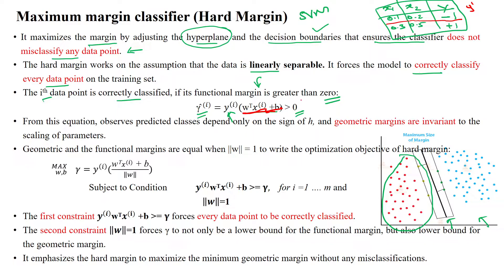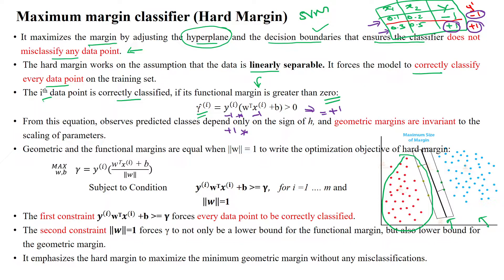For the i-th sample, the predicted output y' is w-transpose x plus b. If the predicted output is minus 1 and actual output is also minus 1, applying this to the functional margin equation gives a positive value. Similarly, if the actual output is plus 1 and predicted output is also plus 1, we again get a positive value. So whether the class is negative or positive, if it is correctly classified, you get a positive value — that is the condition: greater than zero.